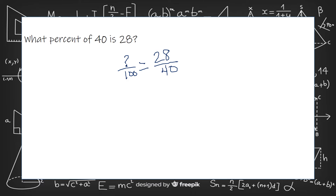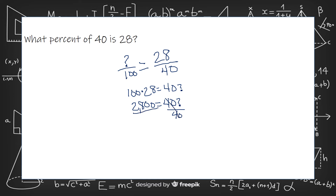We're going to cross multiply: 100 times 28 is 2,800. Because the 40 is squished up next to that question mark, we're going to divide both sides by 40. So 2,800 divided by 40 is 70.